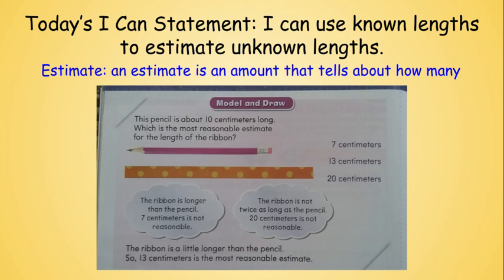Right away I know it can't be 7 centimeters. The ribbon is also not twice as long as the pencil — that'd be like putting two pencils side by side. 10 plus 10 is 20, so that is too much. Therefore the ribbon is just a little longer than the pencil, so 13 centimeters is the most reasonable estimate. The pencil is the known length we use to estimate the unknown length of the ribbon.